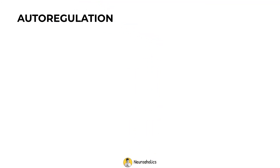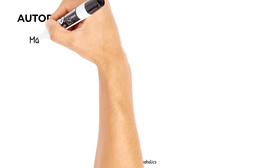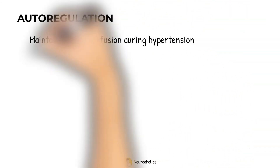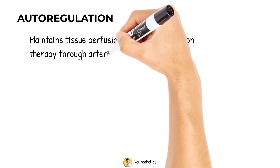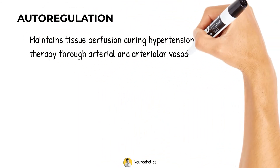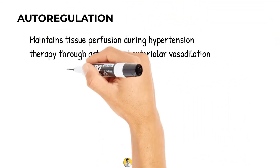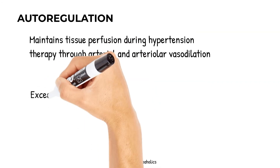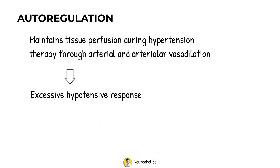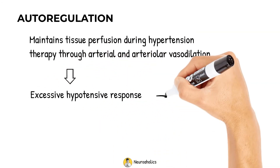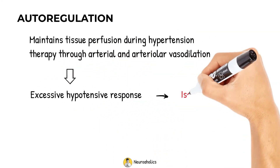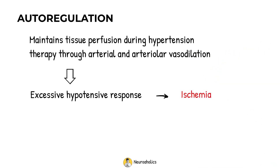Autoregulation not only protects tissues from the consequences of severe hypertension, but it also maintains tissue perfusion during hypertension therapy through arterial and arteriolar vasodilation. An excessive hypotensive response below the autoregulatory range, on the other hand, may result in ischemia symptoms.